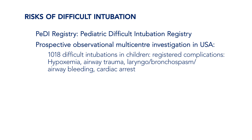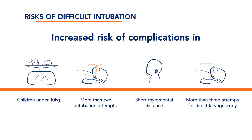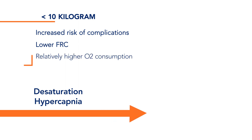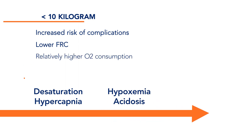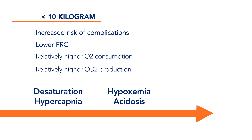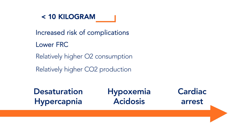A prospective observational investigation carried out in multiple centres in the USA has identified the risks for difficult intubation and accompanied complications. These are children under 10 kilograms, more than two intubation attempts, short thyromental distance, or more than three attempts for direct laryngoscopy before switching to another intubation technique. The reason why small children are more at risk of complications is because of their lower functional residual capacity, relatively high oxygen consumption and high carbon dioxide production, which causes faster desaturation, which may lead to bradycardia and cardiac arrest much sooner than in larger children or adults.